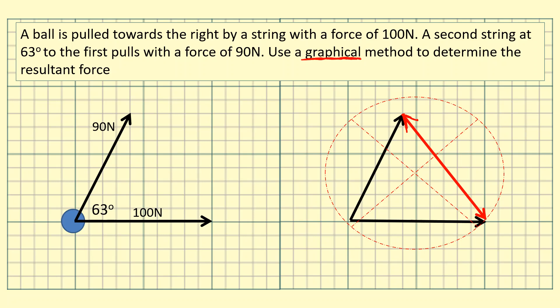First of all, you copy the 100 Newton force using the exact same length in the exact same direction and you join them tip to tail like that. Then you copy the 90 Newton force using the same length and at the same angle. So you need to make sure this angle here is 63 degrees using a protractor.